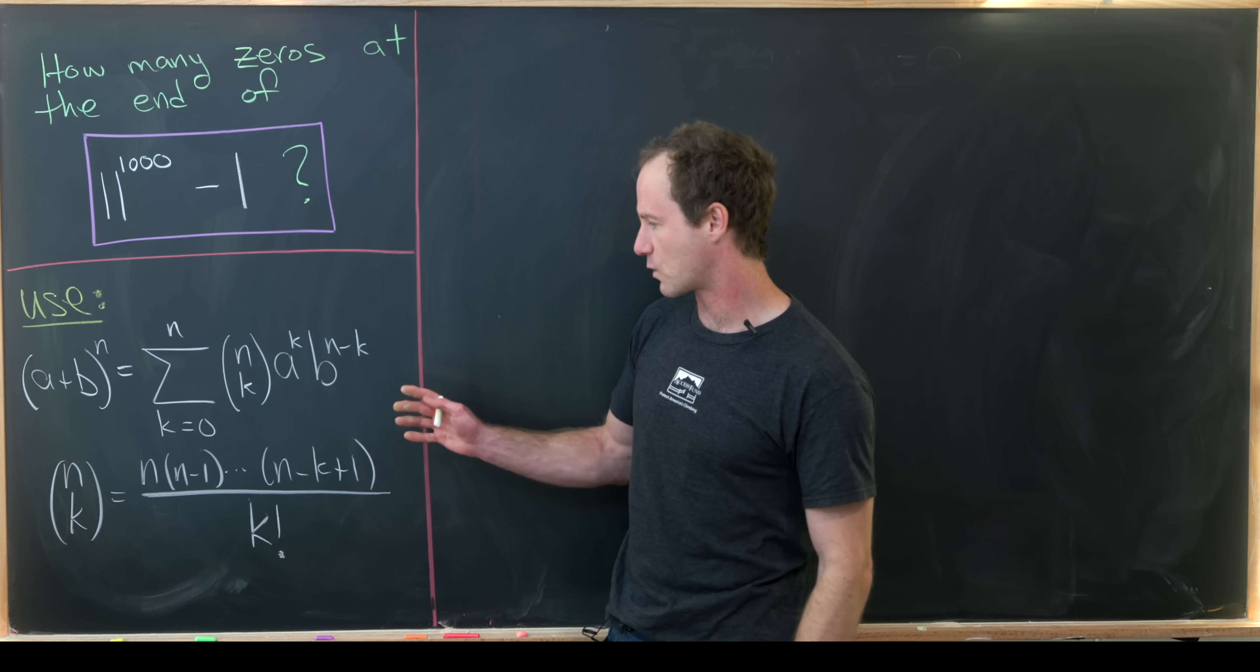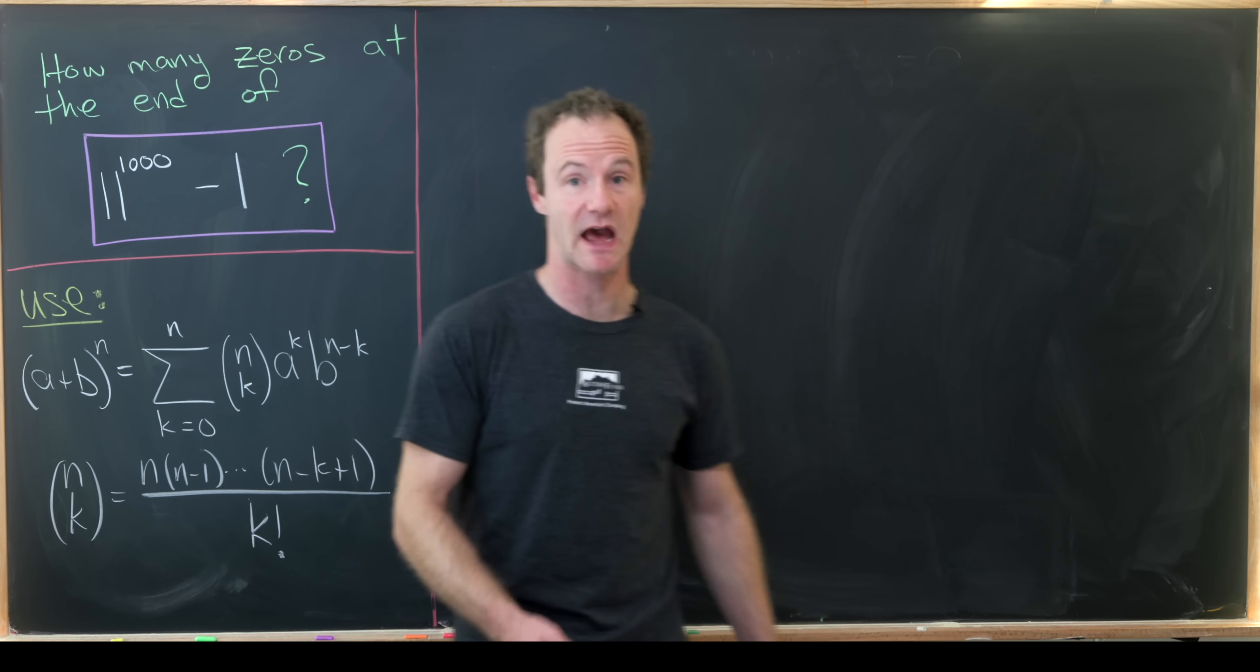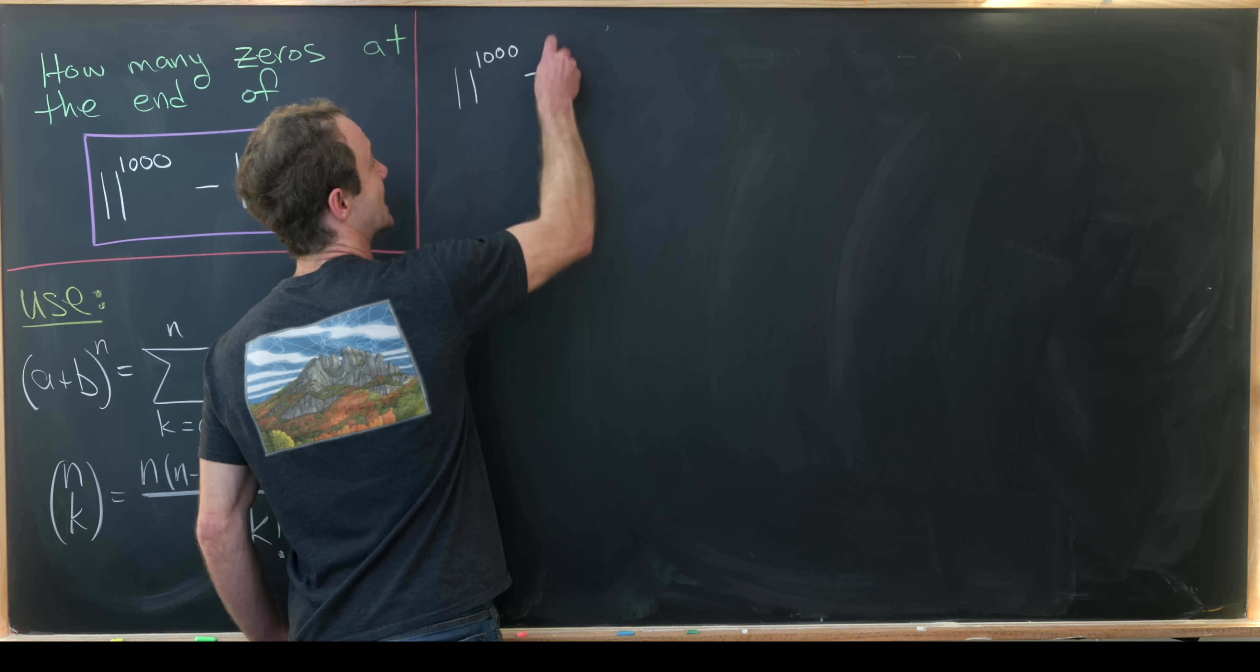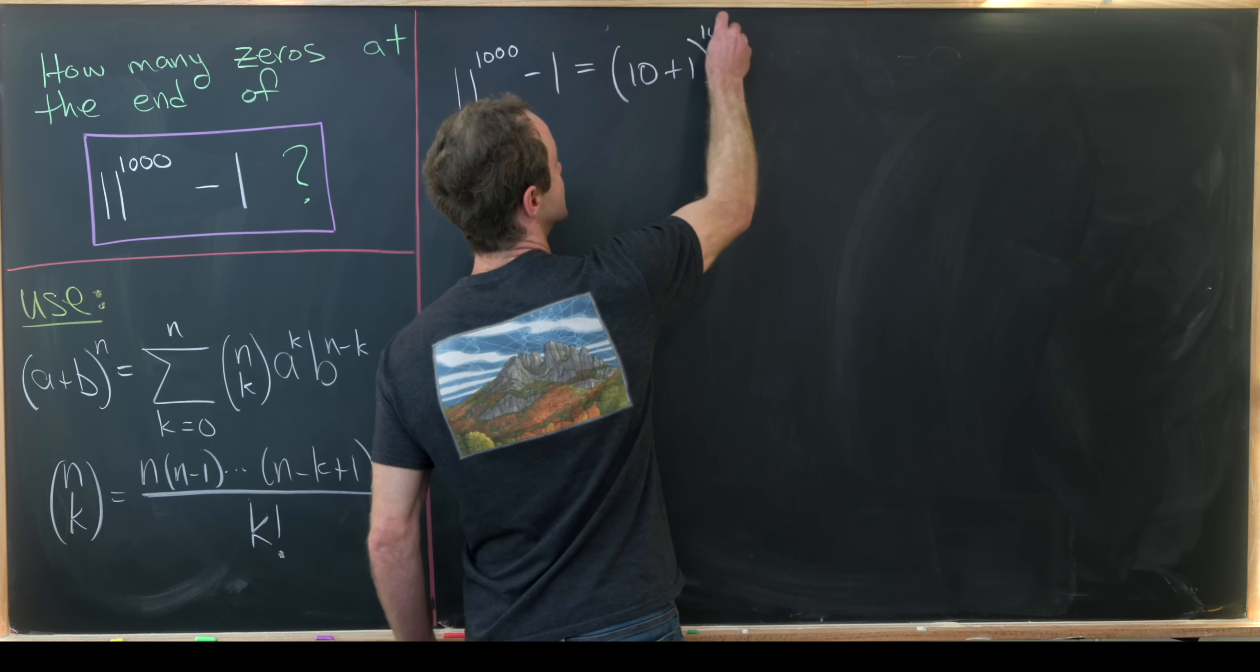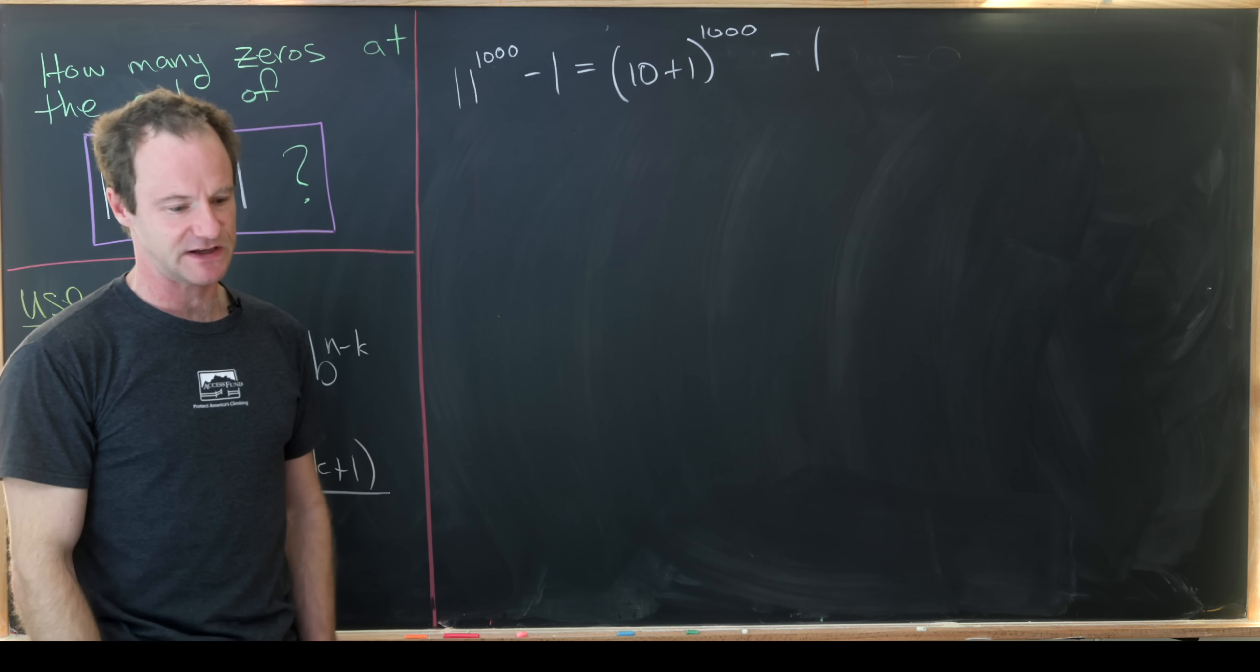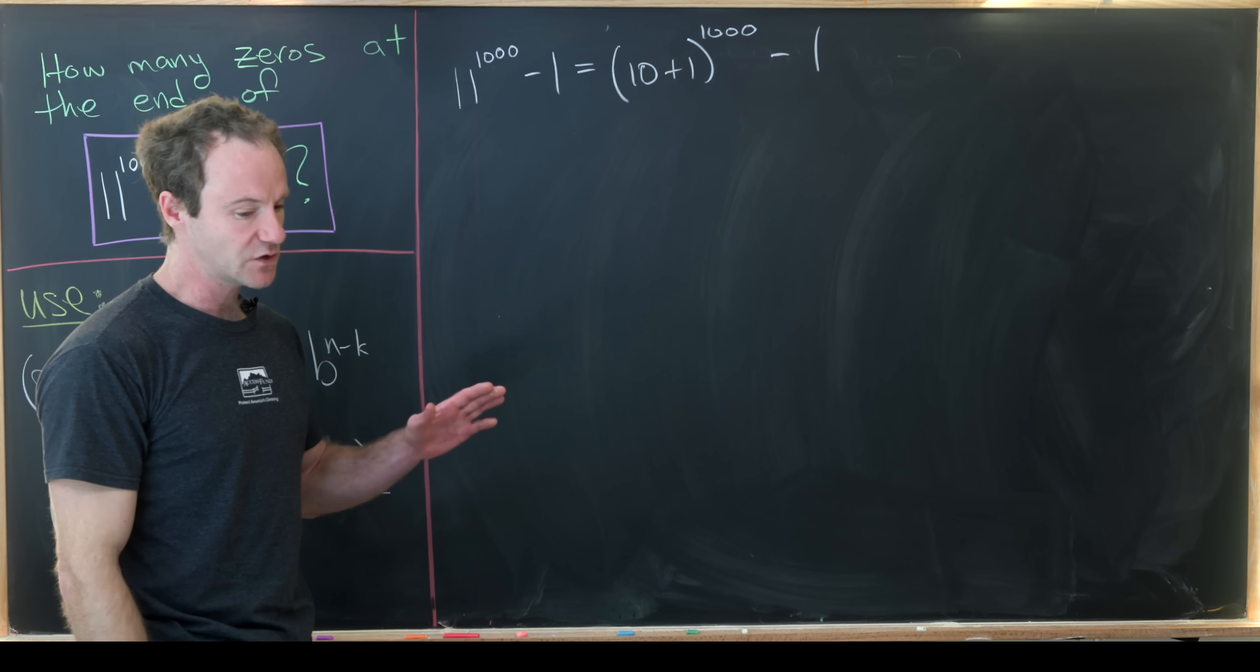Okay so now that we're armed with this binomial expansion formula let's look at our goal. So we'll take 11 to the thousand minus 1 and I'll write it as 10 plus 1 to the thousand minus 1. So clearly 11 is 10 plus 1. We're really doing fancy stuff here.